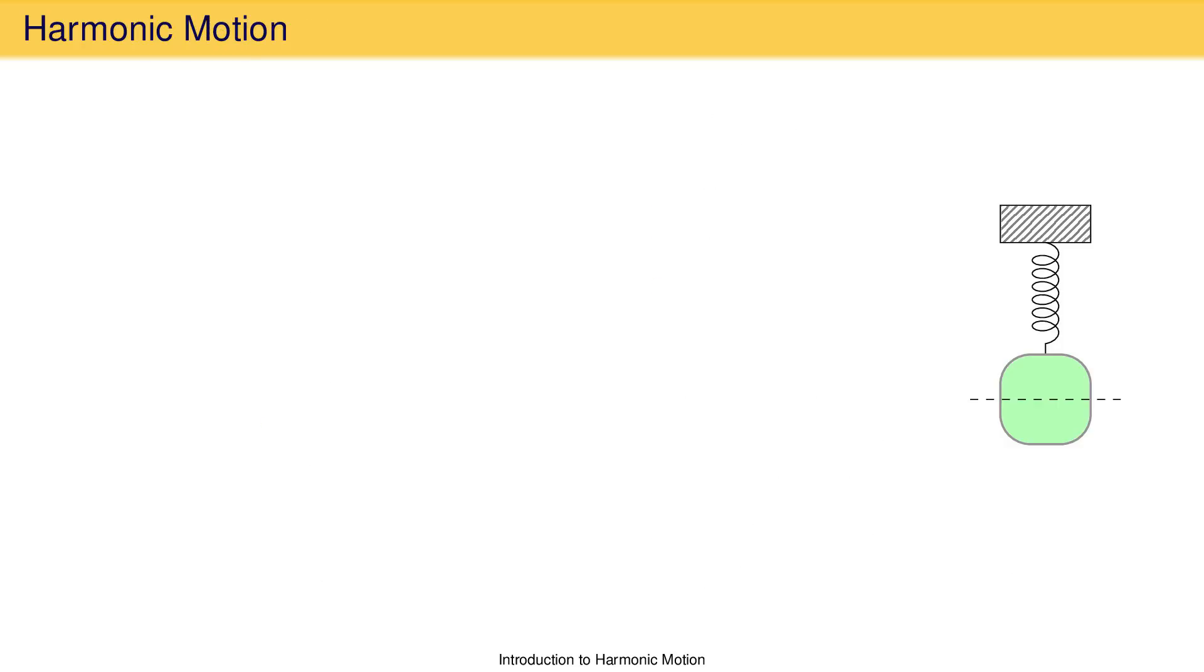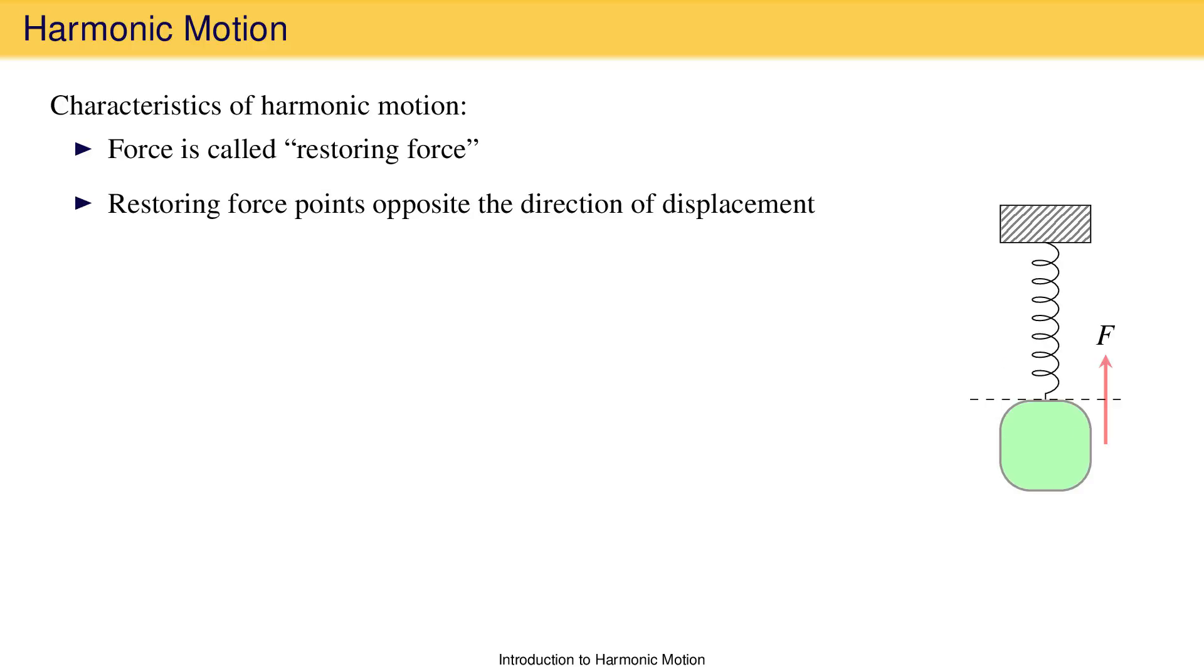The harmonic oscillator is one example of a general class of motion called harmonic motion. All harmonic motions share certain characteristics. In every type of harmonic motion an object moves under the influence of a force, called the restoring force, that always points in the direction opposite the displacement from equilibrium. The magnitude of the restoring force is always proportional